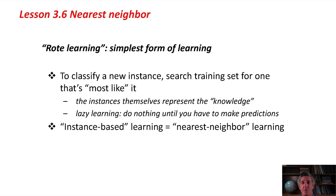Then, to classify a new instance, it searches the training set for one that's most like the new instance. The representation of the knowledge here is just the set of instances. It's a kind of lazy learning. The learner does nothing until it has to do some predictions. Confusingly, it's also called instance-based learning. Nearest Neighbor learning and instance-based learning are the same thing.